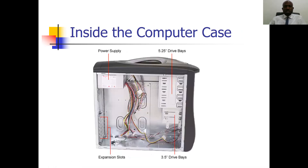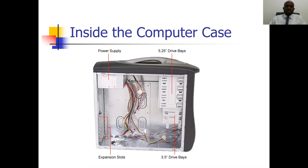This is the inside of the computer case, where we have the power supply, the 5.25-inch drive bay, and the 3.5-inch drive bay. There are also expansion slots — slots within the system unit that help you expand the processing capacity of your computer. For example, if you have a 64-megabyte RAM you can add more, or if your computer doesn't have a video card you can add one. So expansion slots allow you to slot in additional memory, video cards, and audio cards.